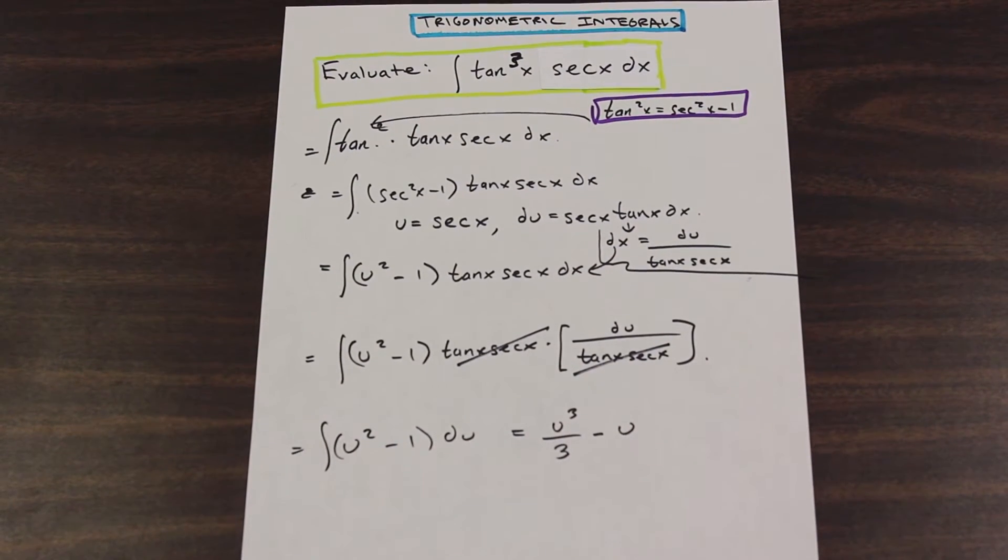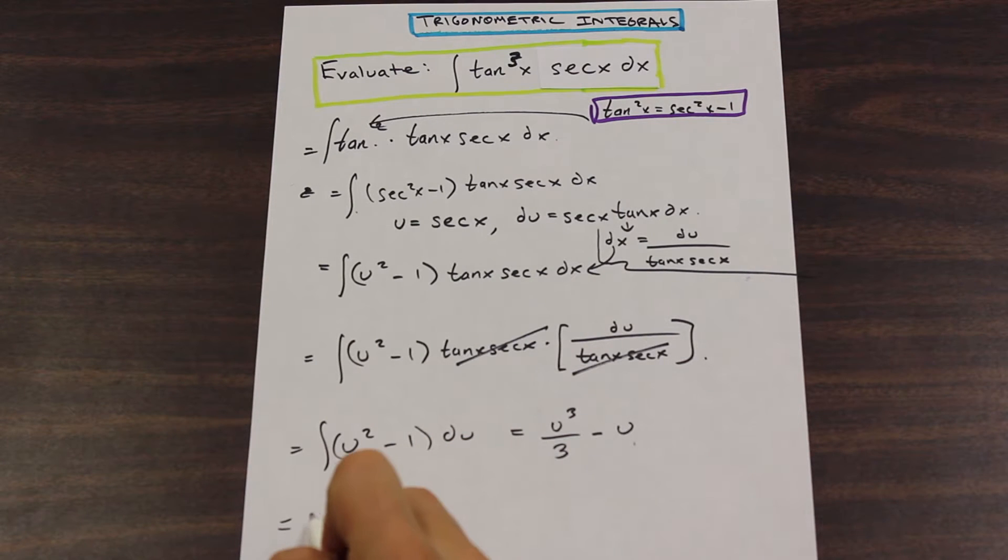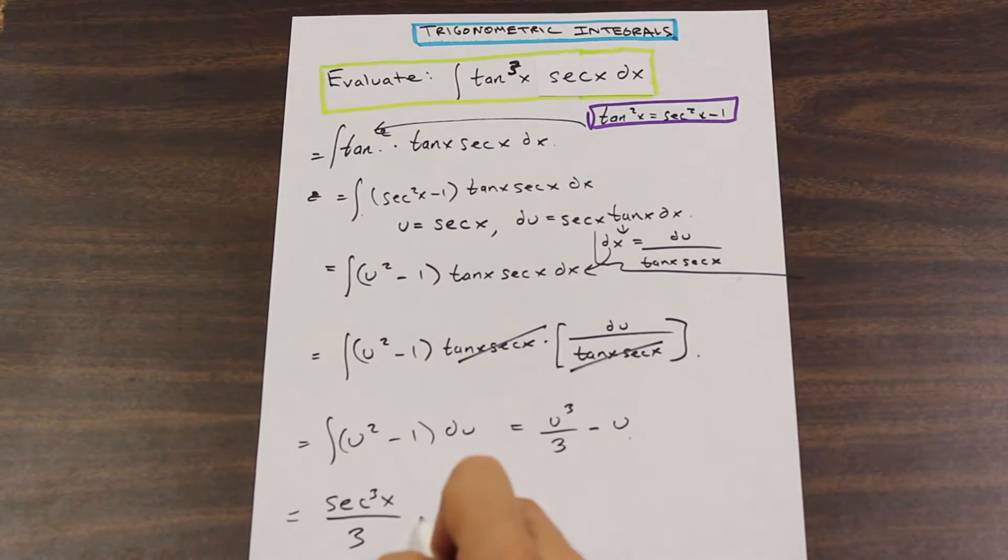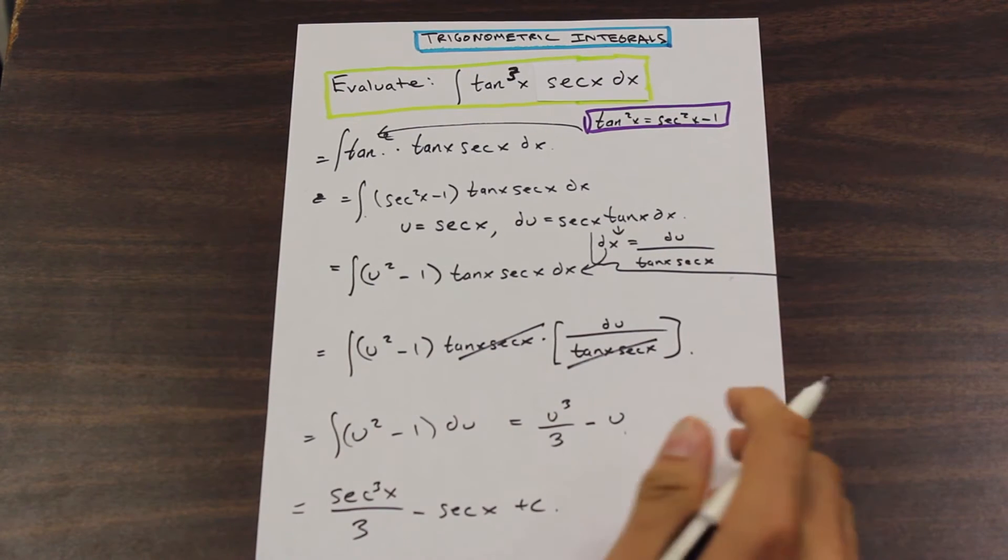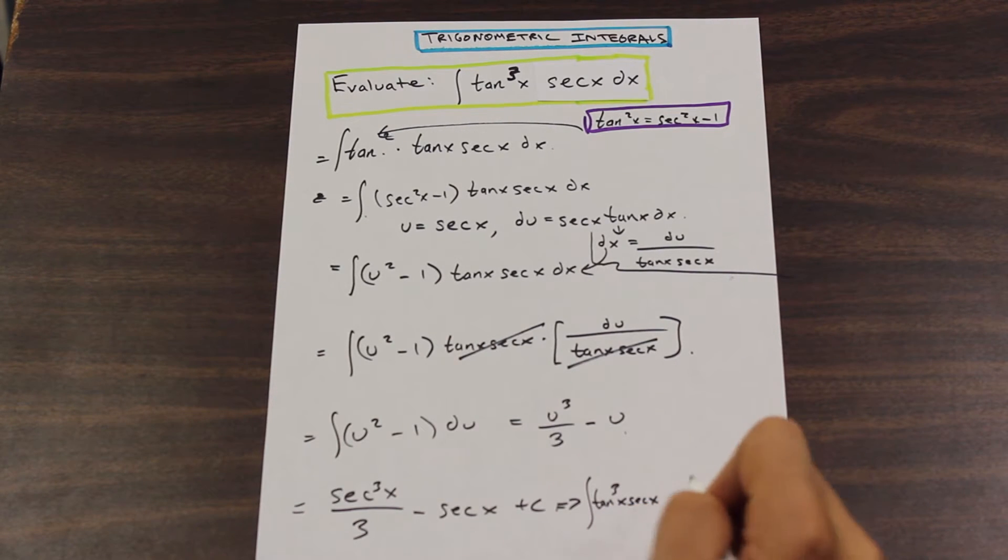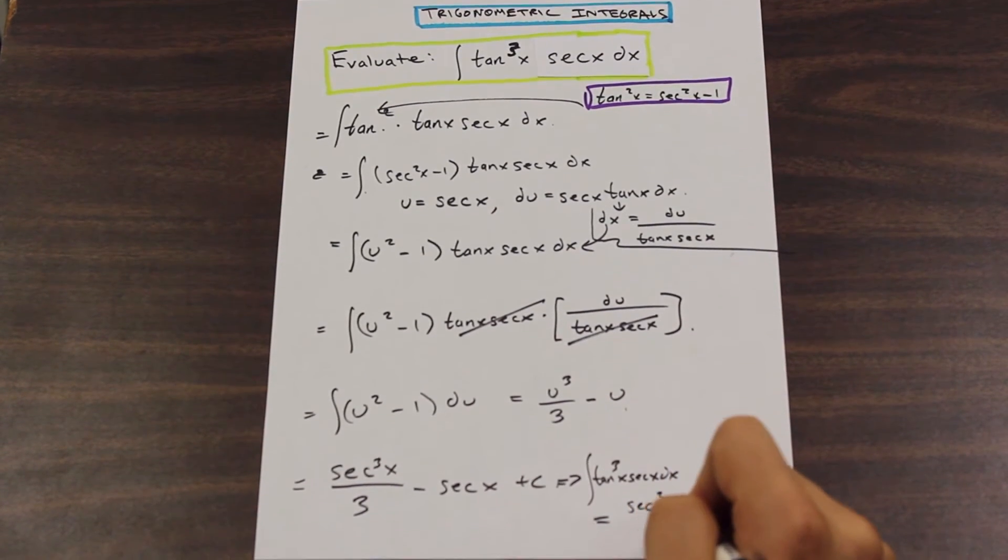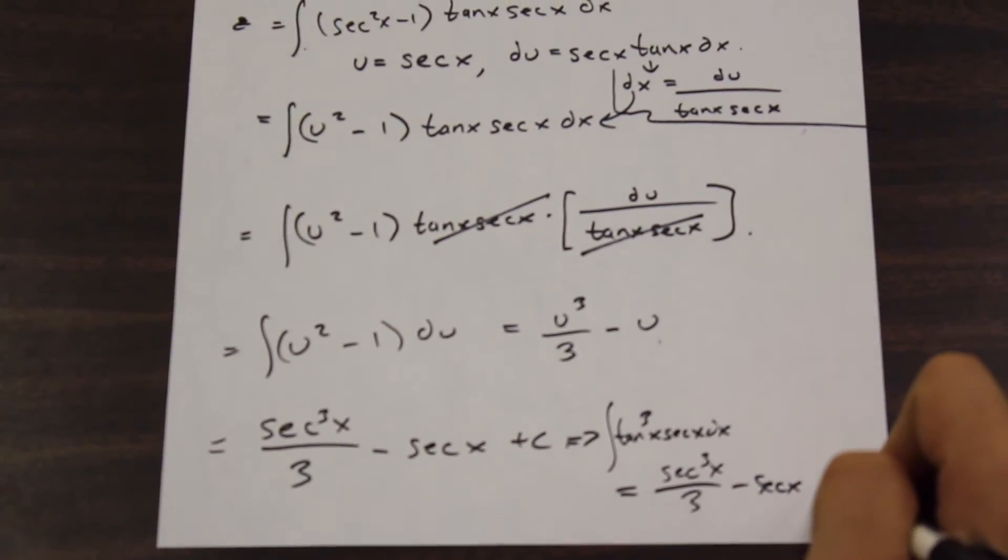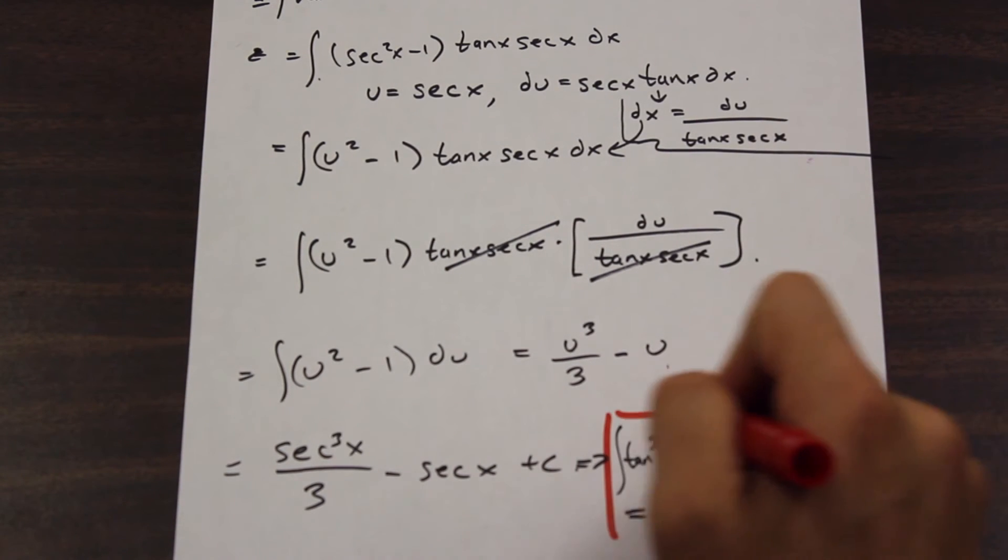And now we can go ahead and reapply our u into the function. Just substitute back in. So we should be left with secant cubed x over 3, because u is secant, over 3 minus secant x. Just rewrite that as a final answer. So we have the integration of tan cubed x secant x dx is equal to secant cubed x over 3 minus secant x plus c. And that is our final answer.